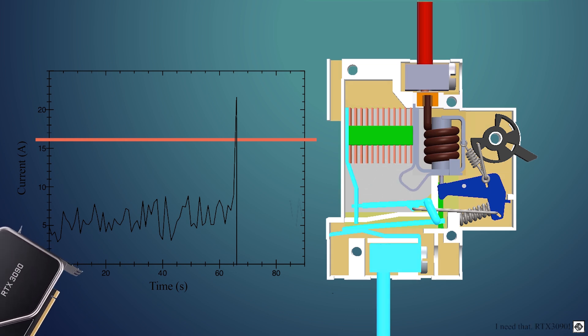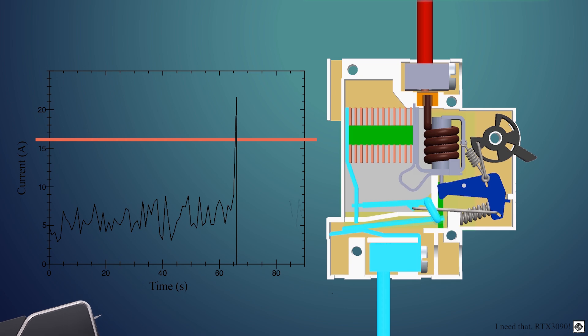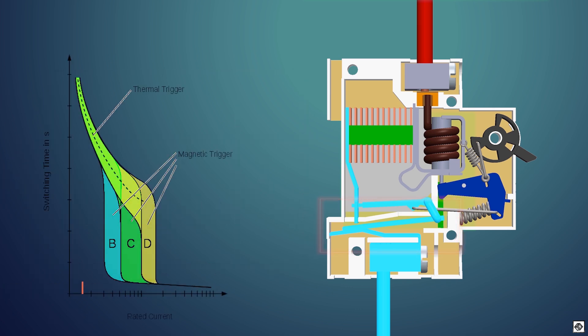And you may know that some appliances have power spikes where they can draw more current than their rated value. So we need a mechanism that takes time to trigger and won't trip the MCB during small spikes. Thus we have this bimetallic strip. This will trigger when a small overload is for a large amount of time or a large overload is for a small amount of time.